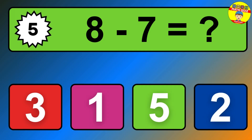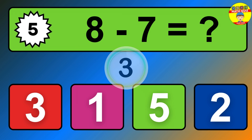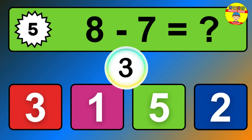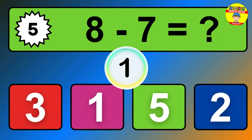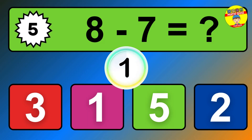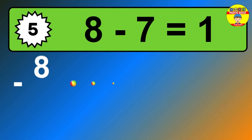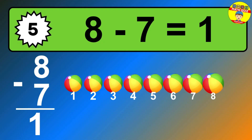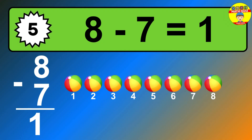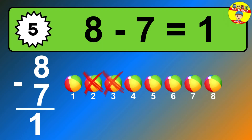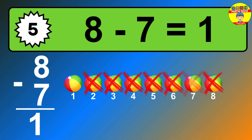Question 5. 8 minus 7 equals what? So the answer is 8 minus 7 is 1. Let's count it. 1.